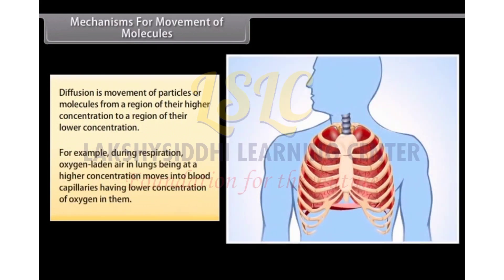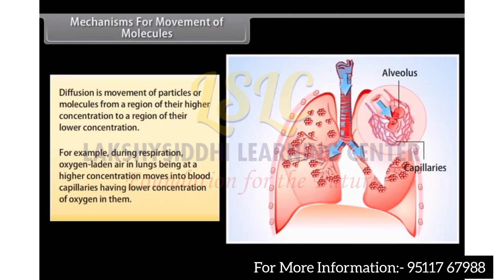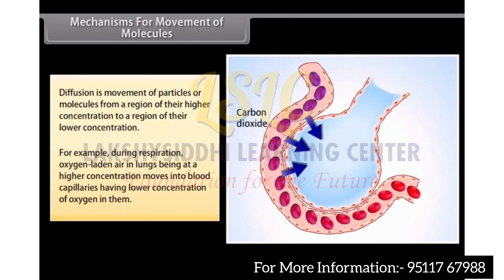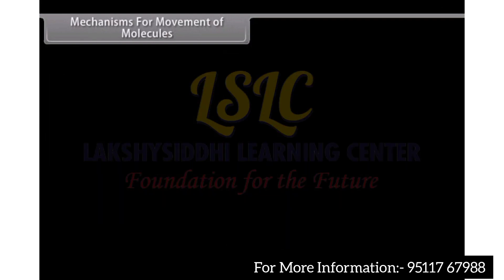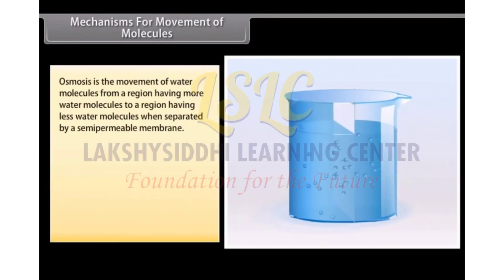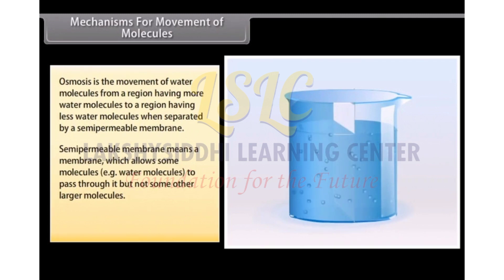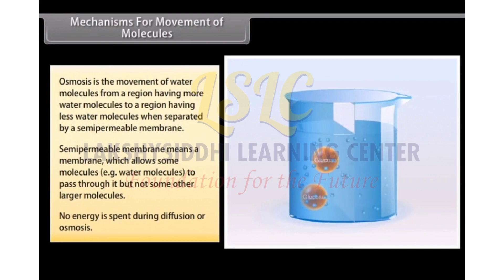For example, during respiration, oxygen-laden air in lungs being at a higher concentration moves into blood capillaries having lower concentration of oxygen in them. Osmosis is the movement of water molecules from a region having more water molecules to a region having less water molecules when separated by a semi-permeable membrane. Semi-permeable membrane means a membrane which allows some molecules, that is, water molecules, to pass through it but not some other larger molecules. No energy is spent during diffusion or osmosis.